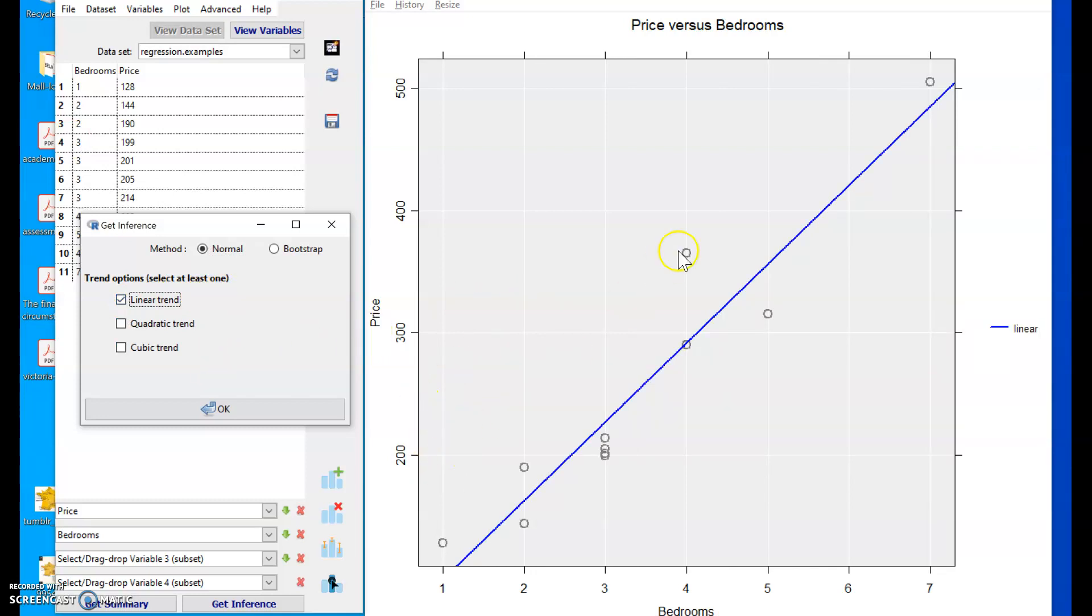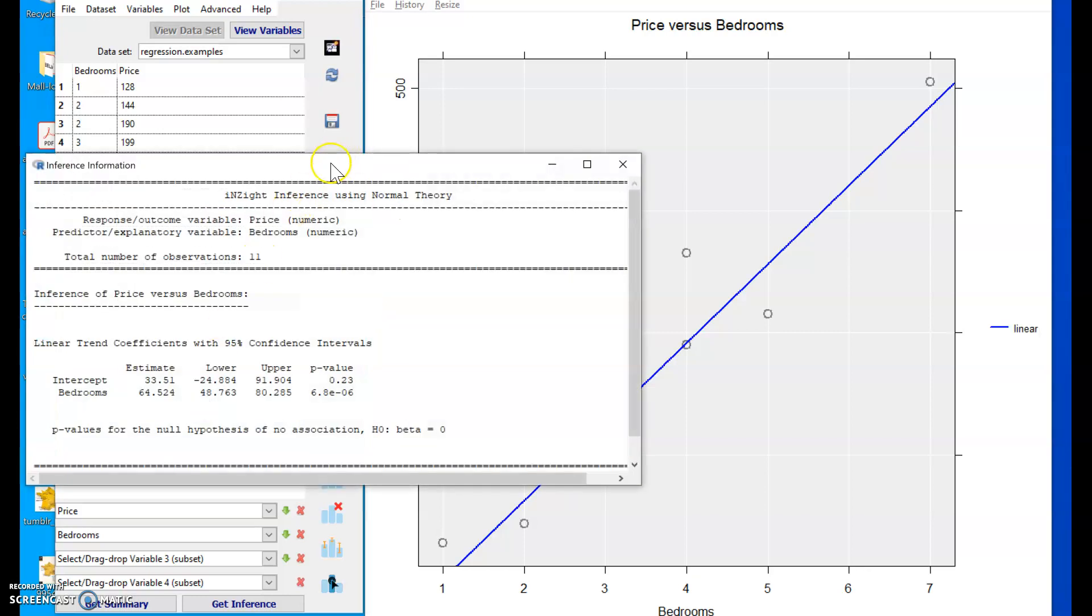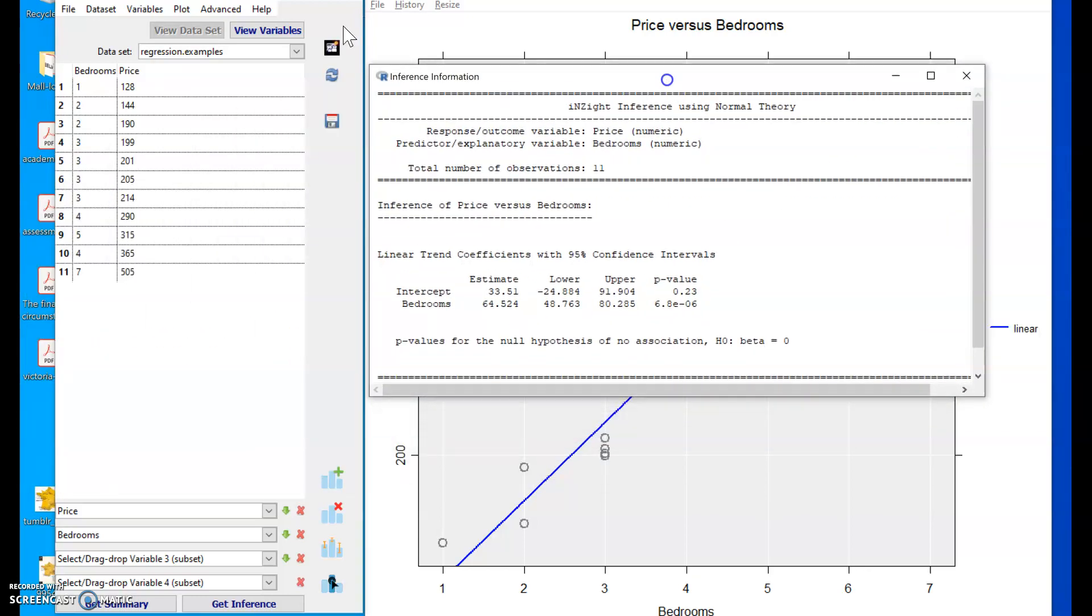So if I select that, it adds the ordinary least squares regression line to the plot. Clicking OK then produces some output for me.